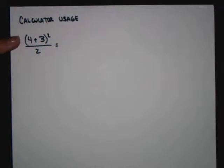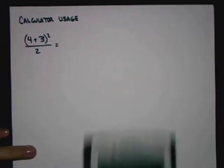So here's an expression. This says take the quantity 4 plus 3 and square it, and divide your answer by 2. Let's say that I wanted to do this on a calculator.